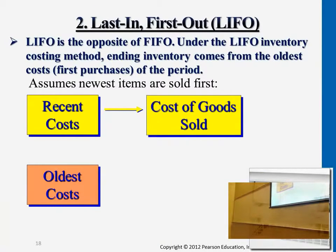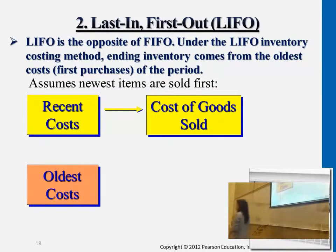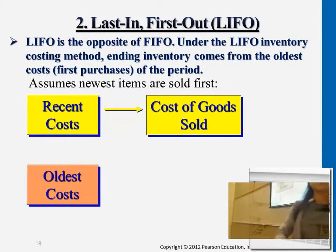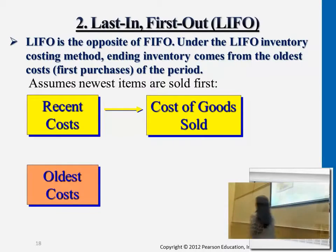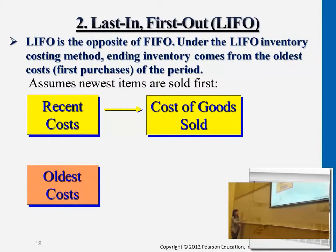As opposed to FIFO, LIFO has entirely the opposite concept. We assume that the latest purchase batch will turn into customers' hands first. So going back to this example, we have three purchase transactions, and if the first 1,000 bottles that we'll be selling to the customer will be choosing from these, we'll be assigning 52 cents per bottle under the LIFO method.